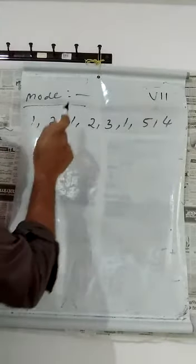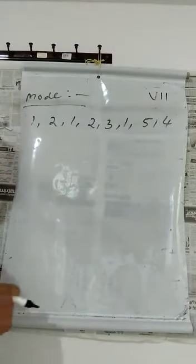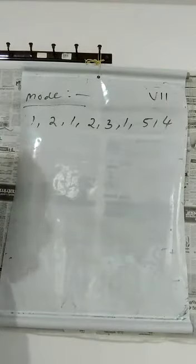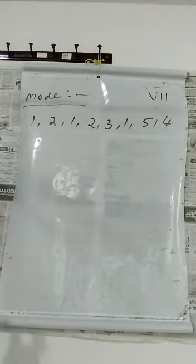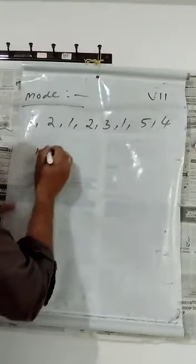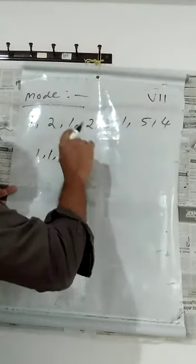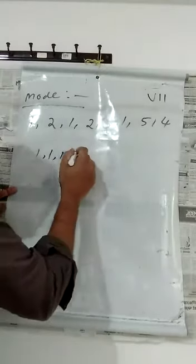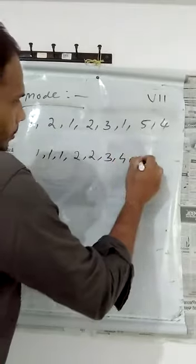The data is 1, 2, 1, 2, 3, 1, 5, 4. Which is the most occurring number? If you want, you can arrange the numbers with the same values together. You can arrange the numbers in ascending or descending order. Ascending means smallest to the greatest. So arranged: 1, 1, 1, 2, 2, 3, 4, 5 — eight data values.